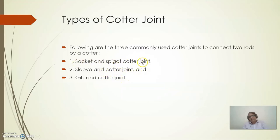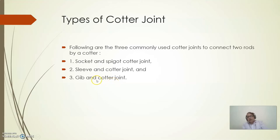Instead of a socket, a sleeve is used, and the two ends of the rods are fitted by means of two cotters. Gibs are provided for the cotter so that it should not come out easily. To lock the cotter, we provide gibs in certain cases.